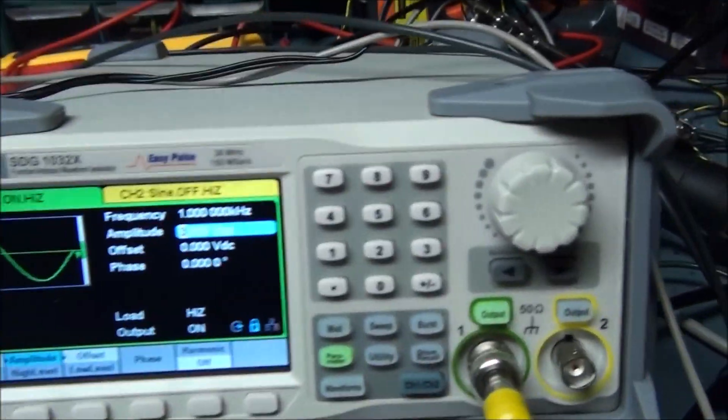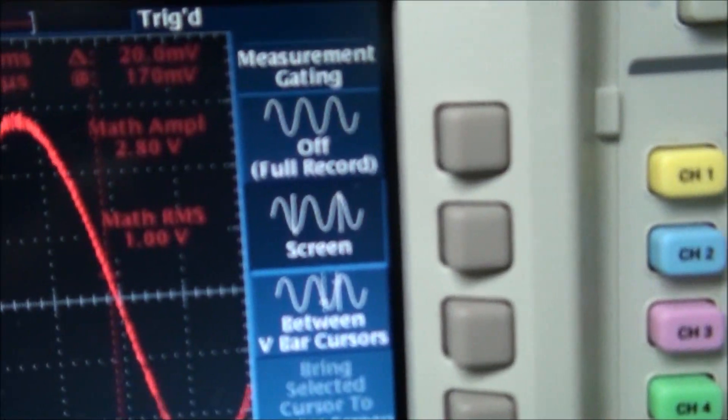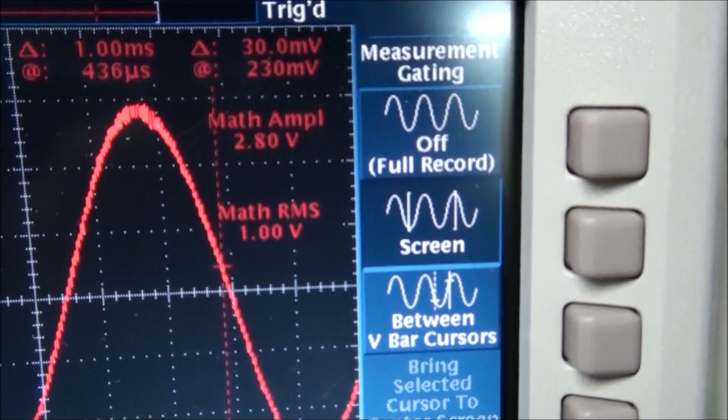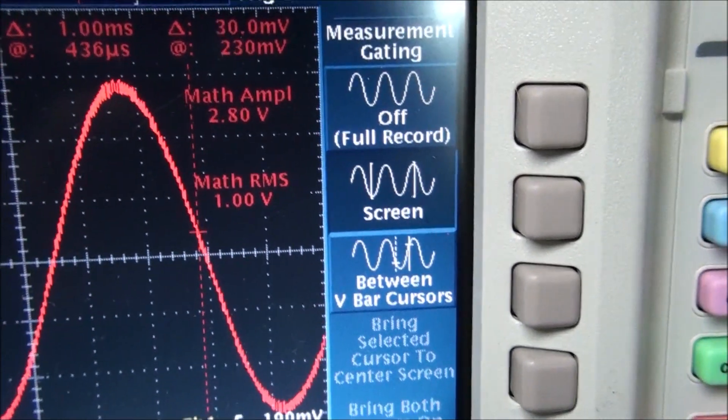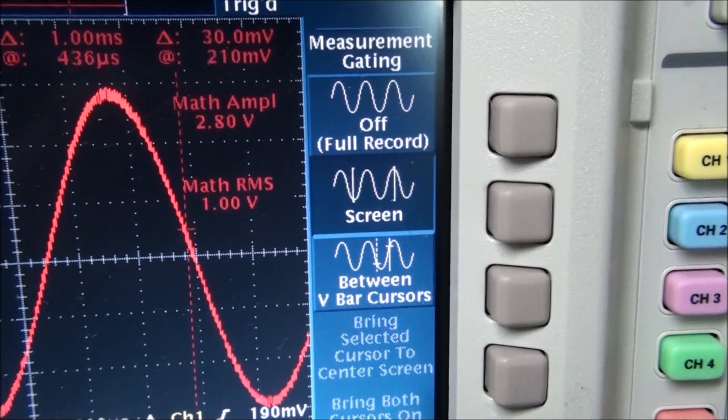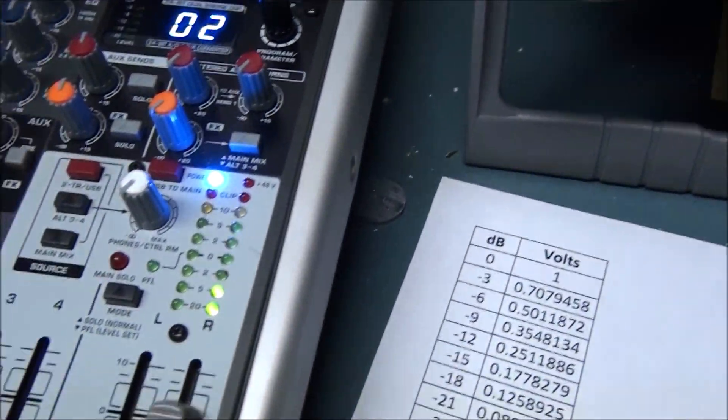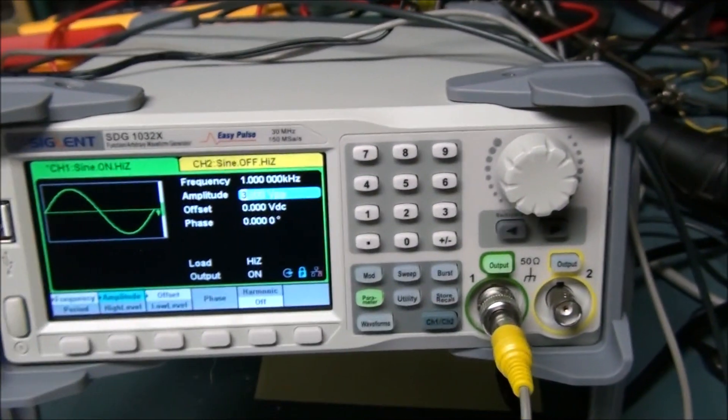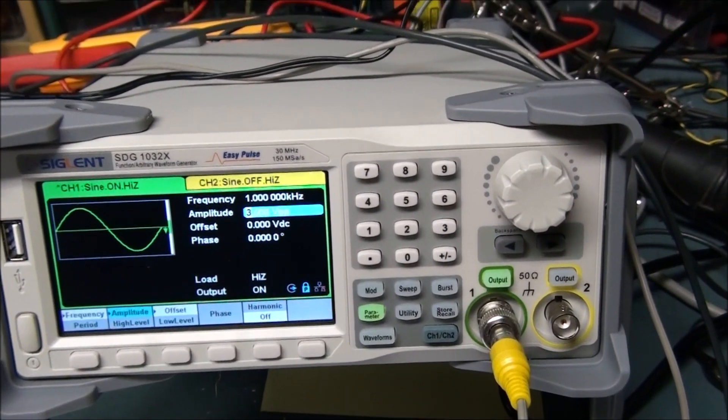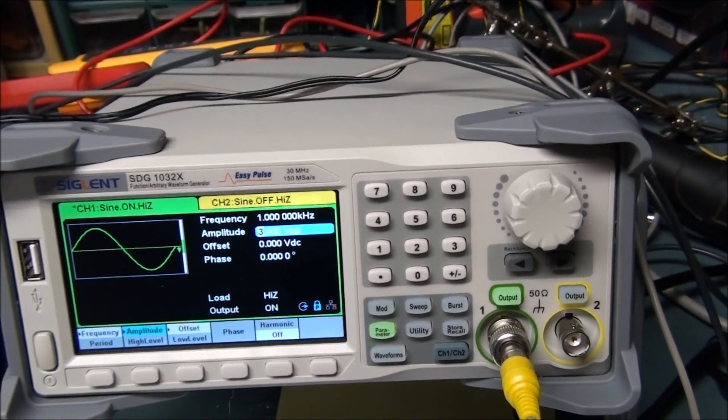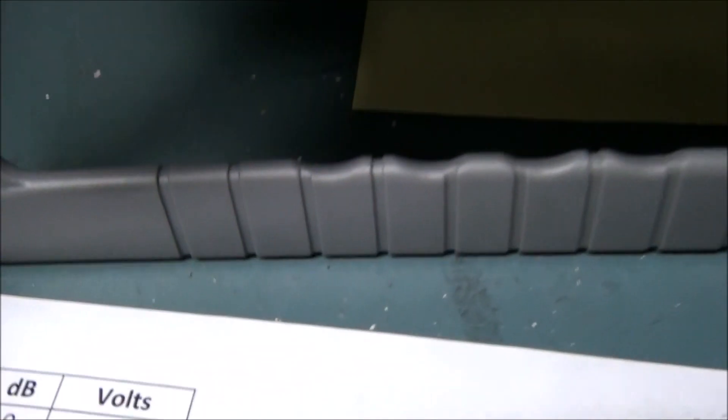Right now I've got a thousand Hertz going in and you can see the RMS down there is one volt. So that's calibrated to one volt. If I adjust the voltage using this level meter, or I could also use this device which is probably more accurate.